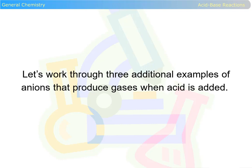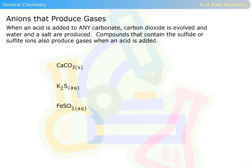Let's work through three additional examples of anions that produce gases when acid is added. Anions that produce gases. When an acid is added to any carbonate, carbon dioxide is evolved and water and a salt are produced.